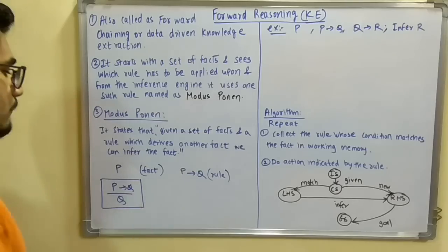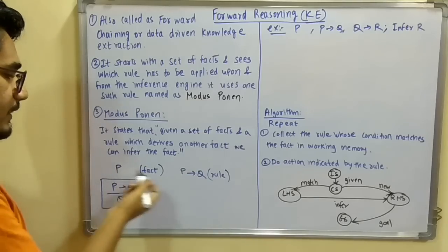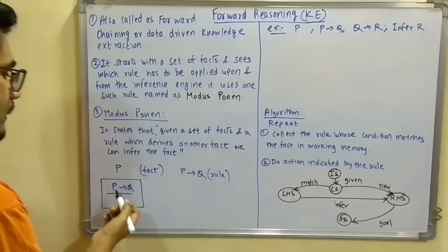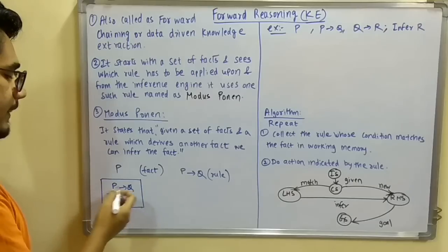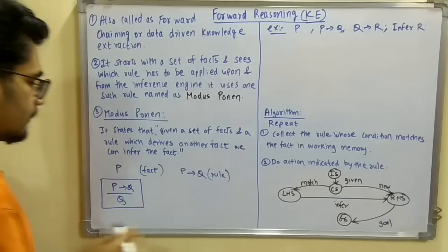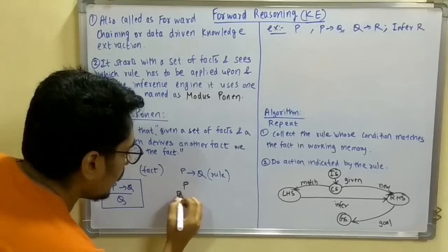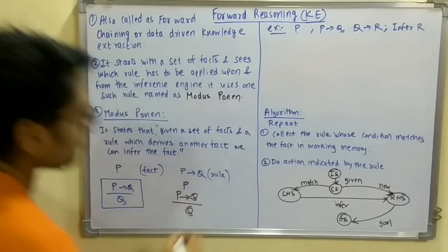What it basically says is: we have one fact P and one rule P derives Q. If P derives Q, you can infer Q. So it is written this way: you have fact P and P can derive Q, therefore you can infer Q.